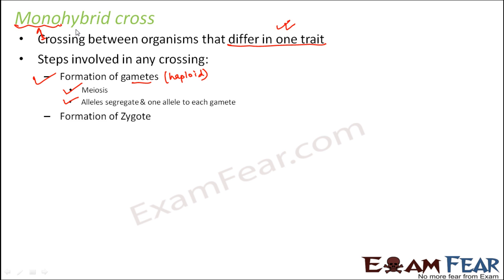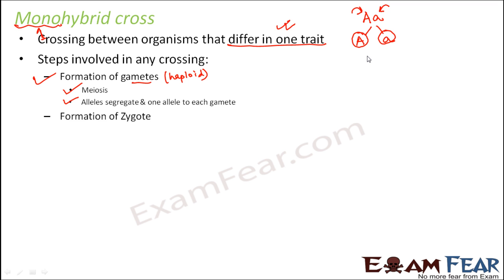In mono hybrid cross, only one trait is considered. Suppose we have two alleles from one parent — these two alleles will segregate, and each allele will give rise to a gamete. Then these gametes combine with the alleles of the other parent, and that is how fusion and gamete formation take place.